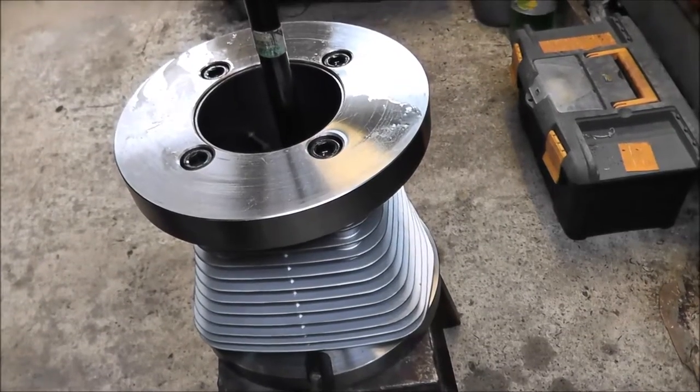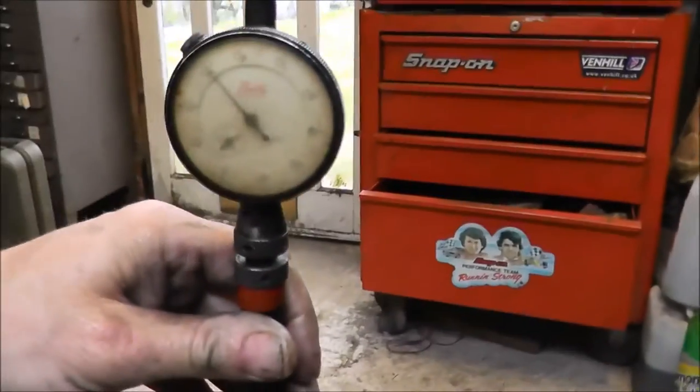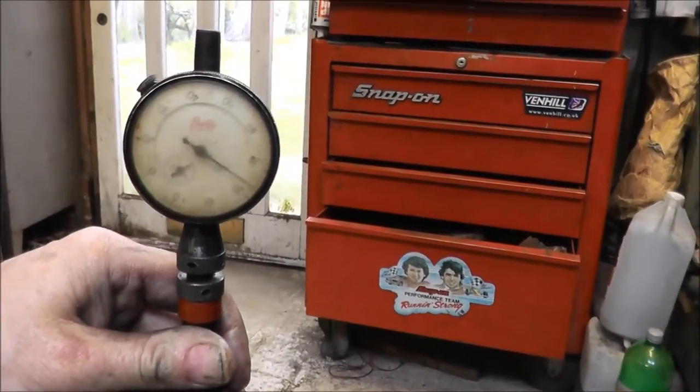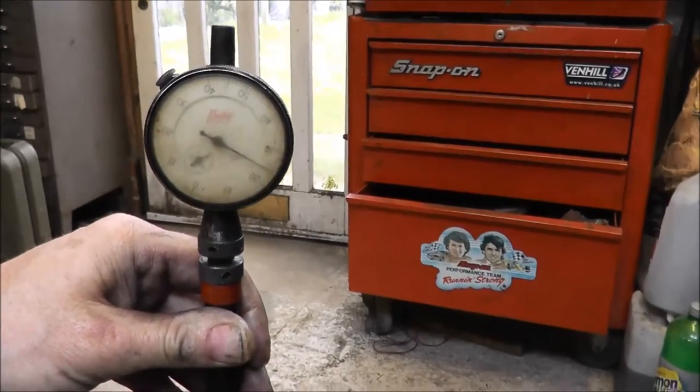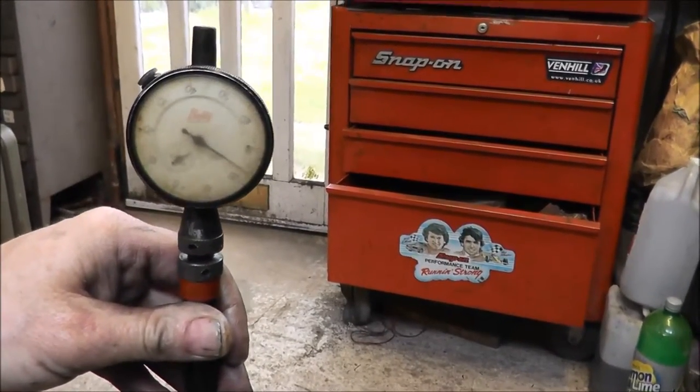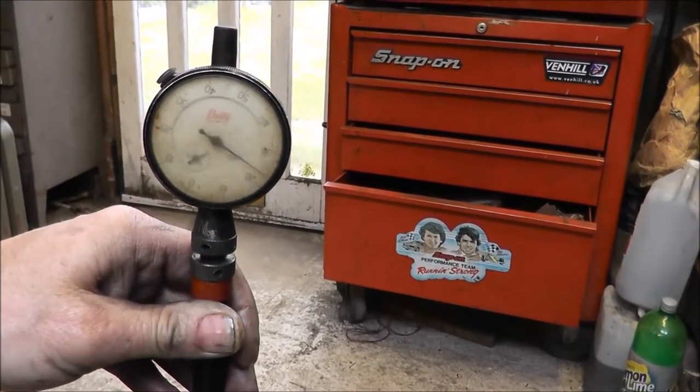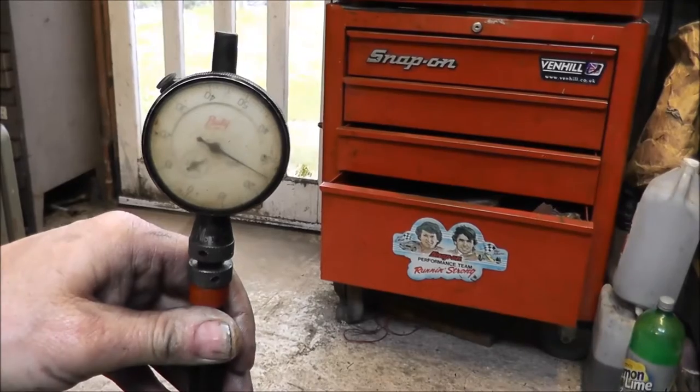We've got the dial gauge in there for the last time. I don't know whether you can see or not—we've got just over 2 thou clearance on there. I've checked it at all different points in the bore, so that's between 2 and 2.5 thou clearance on that for the piston clearance. Job done.